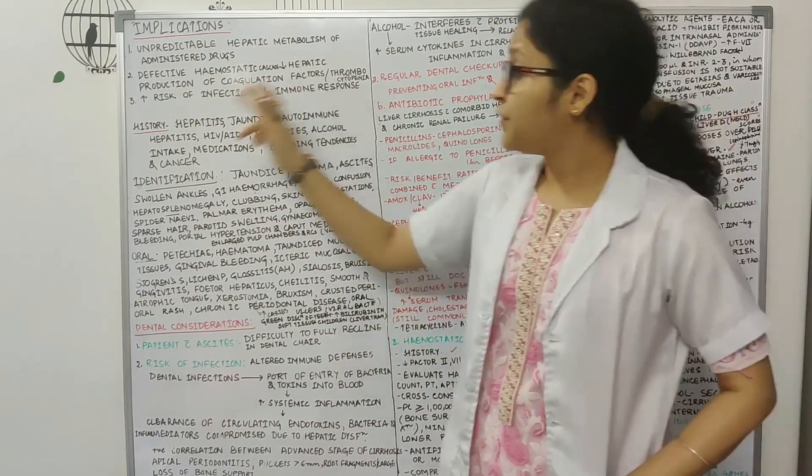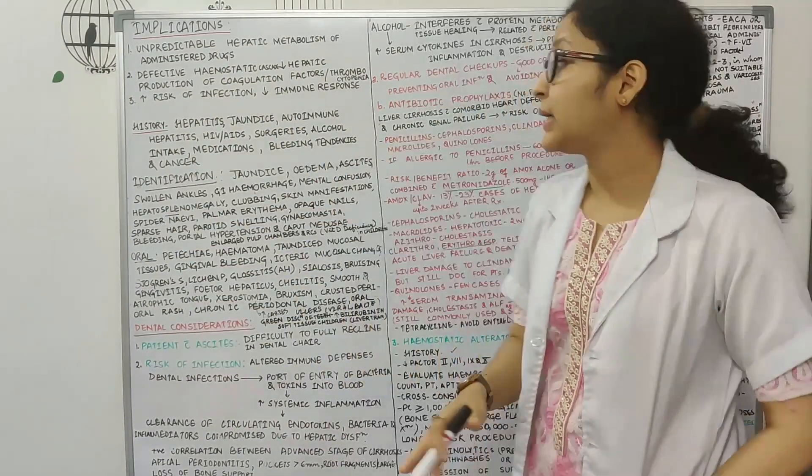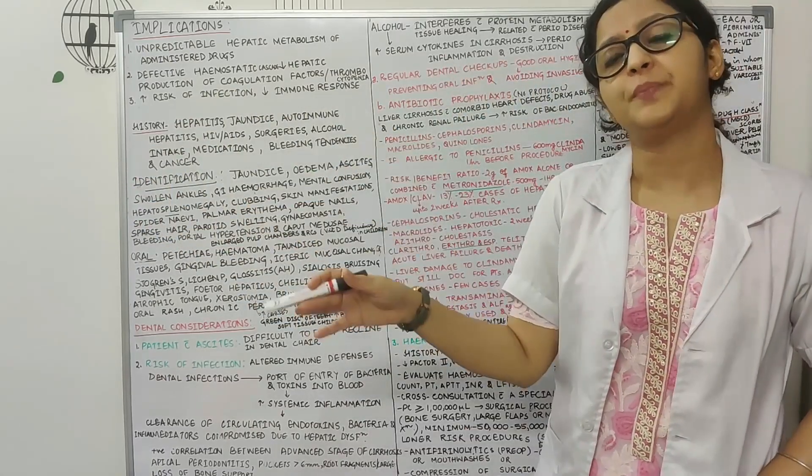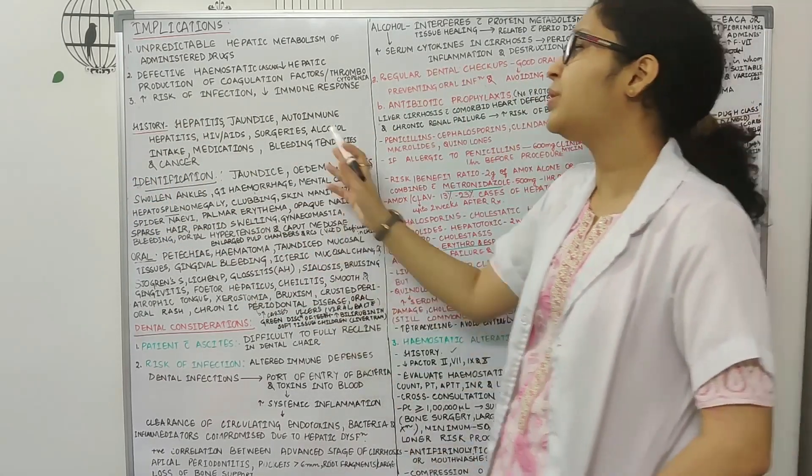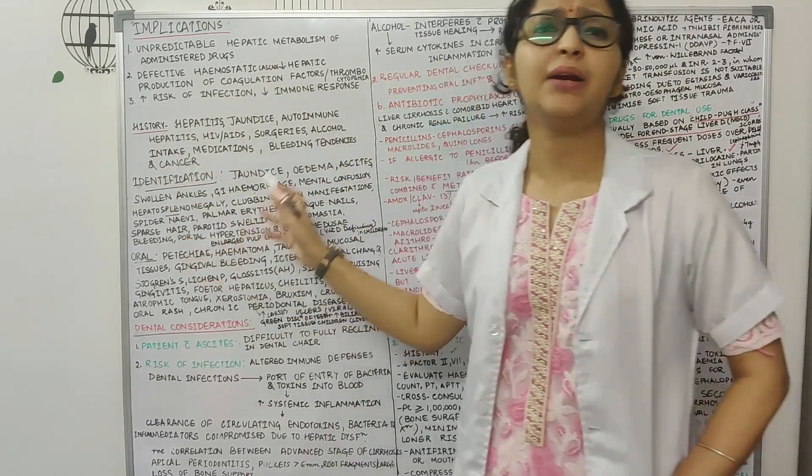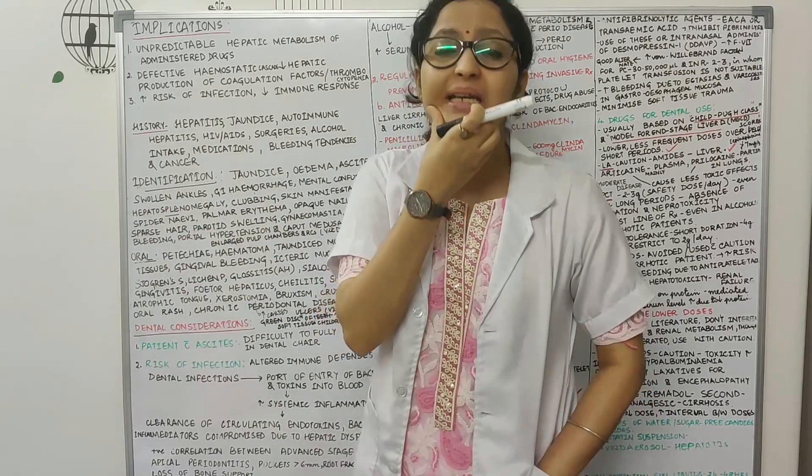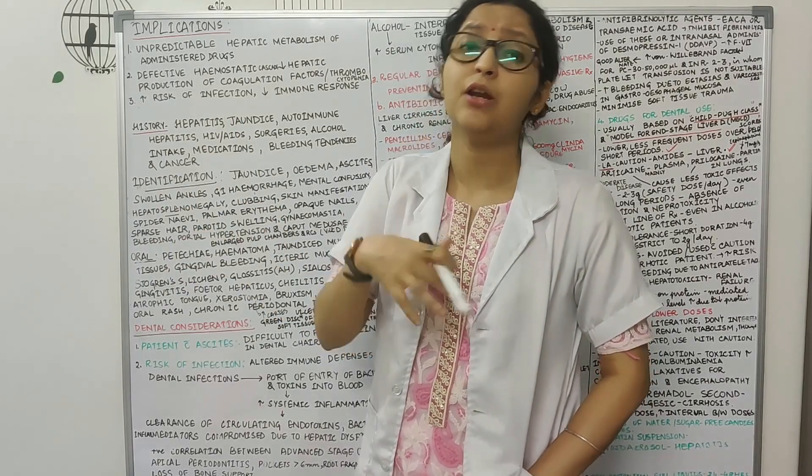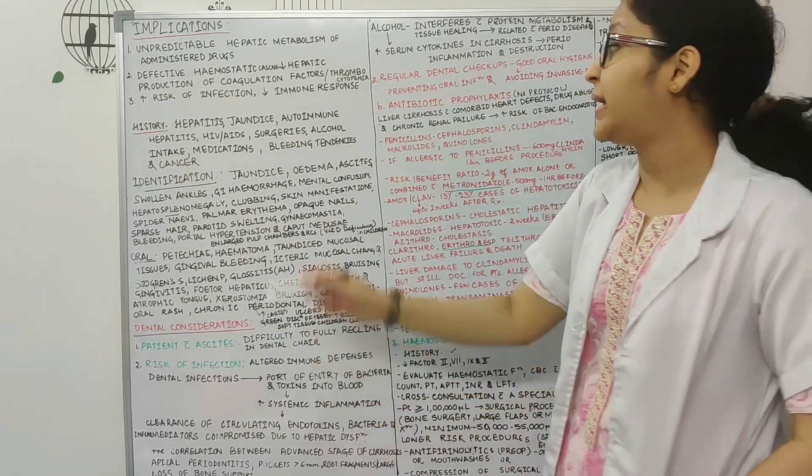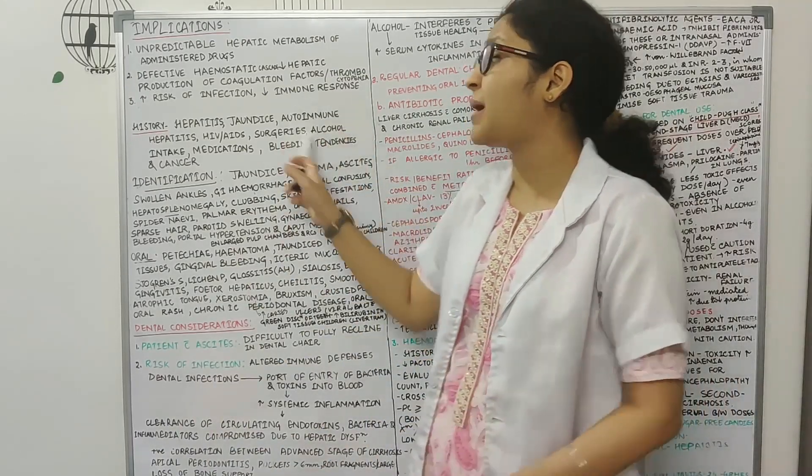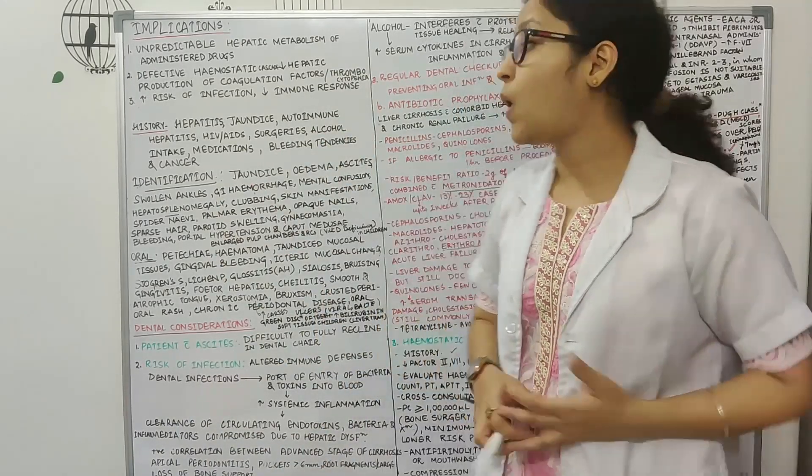Then whenever a liver patient visits in a dental clinic, it's very important that you extract the history of the patient. The history is very important. So you need to ask about any kind of history of hepatitis or any kind of surgeries or what are the medications that the patient has been taking or alcohol intake because certain drugs that you prescribe in these patients, antibiotics might interfere with alcohol as well.